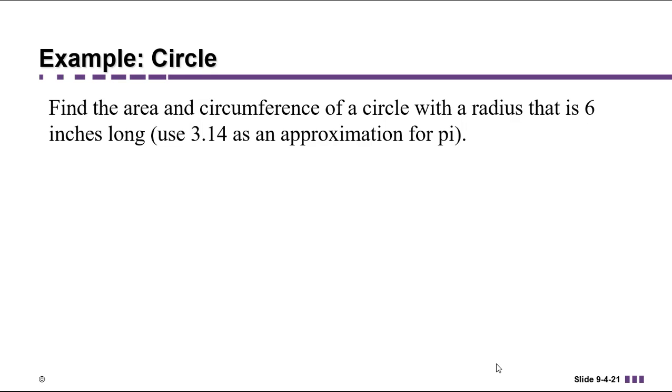Let's practice finding the area and circumference of a circle using the formulas that we just saw. In this case, we're going to look at a circle with a radius that's 6 inches long. Now here's a little tip. When you're working your homework in MyMathLab, if it tells you to use 3.14 as an approximation for pi, then you need to type into your calculator 3.14.